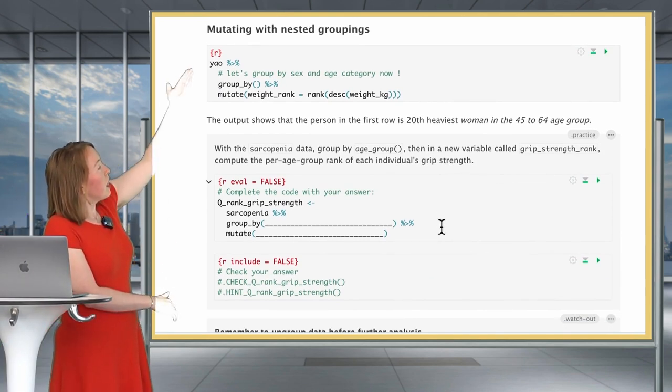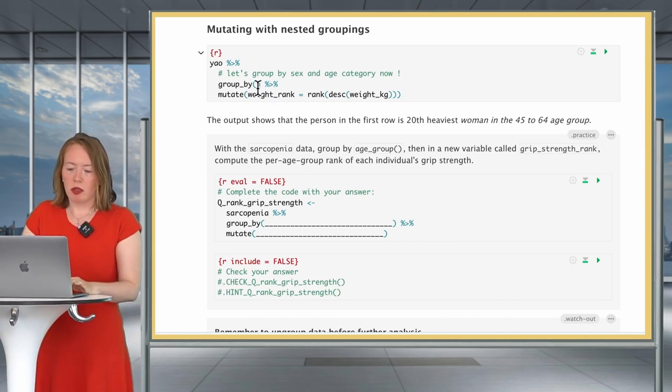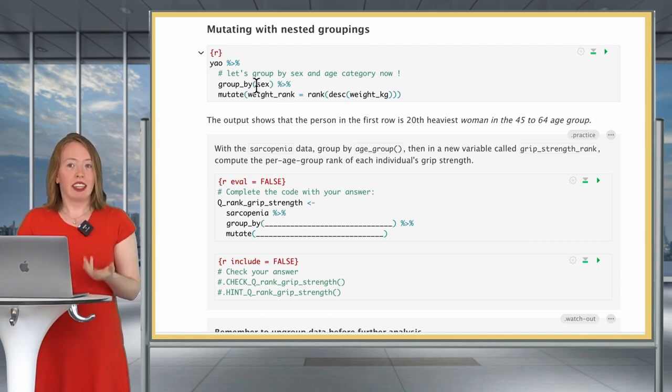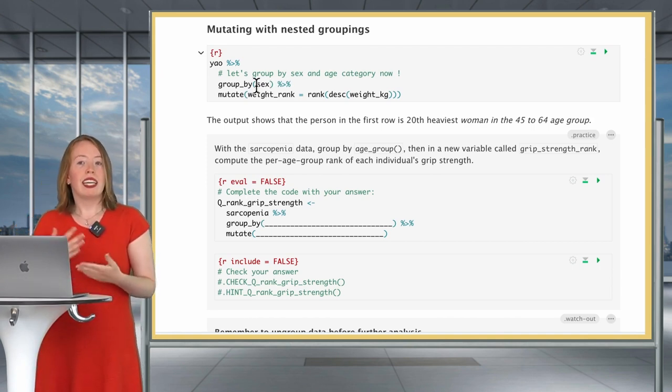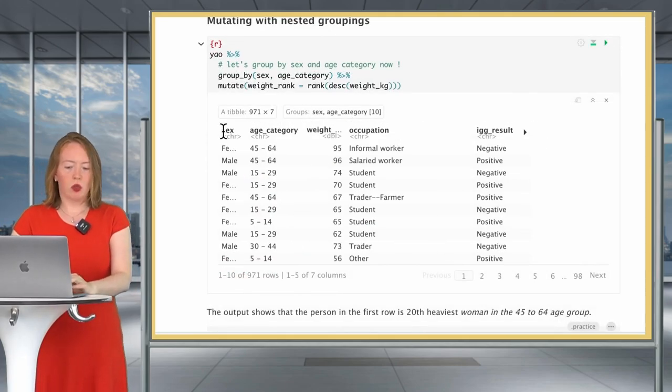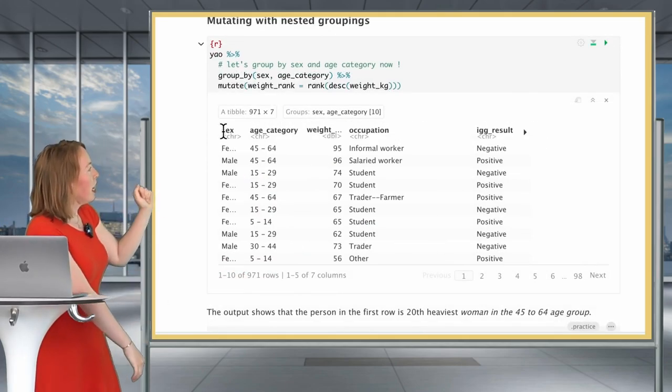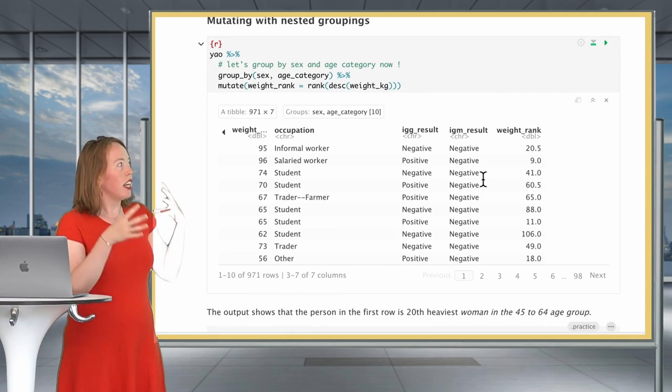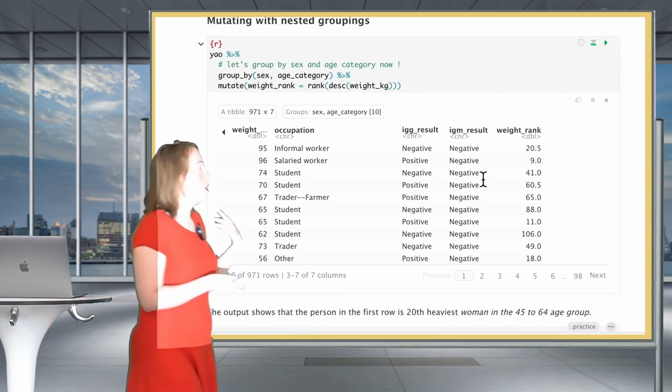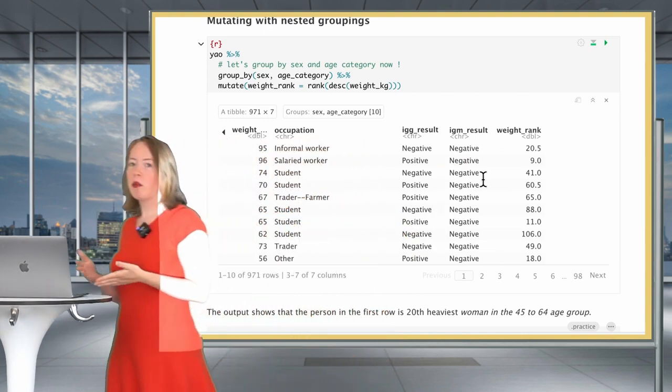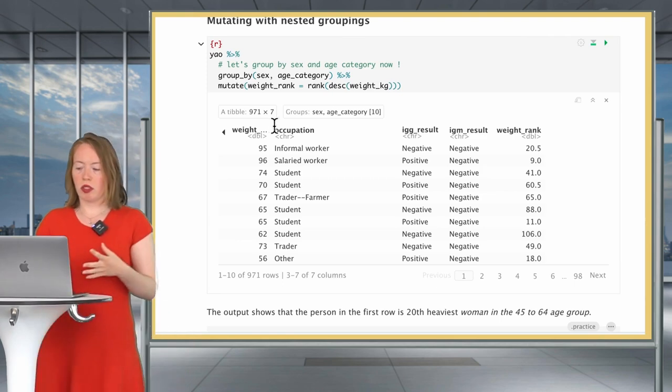Now, same as previously shown for filtering, well, we can do a mutating with nested groupings. Let's see this with a simple example. Let's group by sex and age_category and then have the rank of each individual in their own group. So we group by sex, by age_category. If you look at the first individual who is a female in the age category 45 to 64, we see that in her sex and age group she is ranked as the 20th heaviest individual. So now we have a ranking which is even more tailored to different groups.